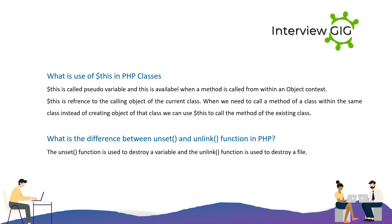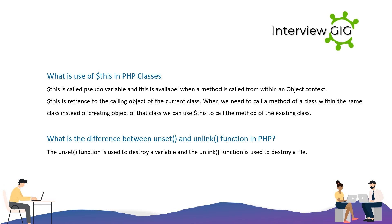What is the use of $this in PHP classes? $this is called a pseudo-variable and is available when a method is called from within an object context. $this is a reference to the calling object of the current class. When we need to call a method of a class within the same class, instead of creating an object, we can use $this.